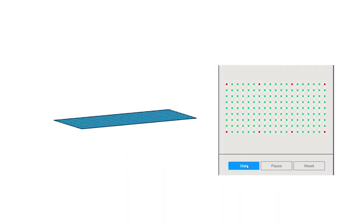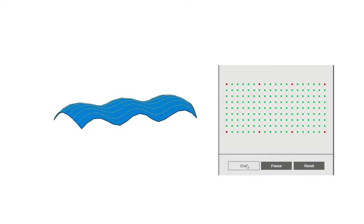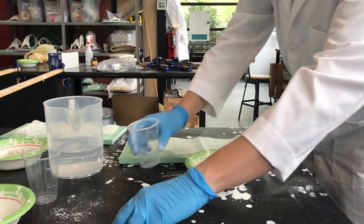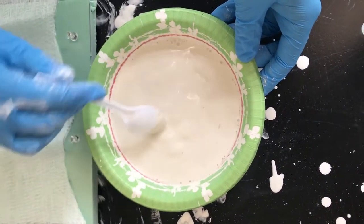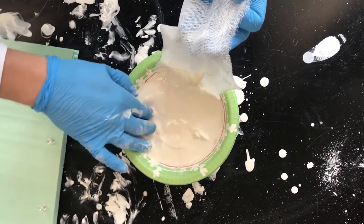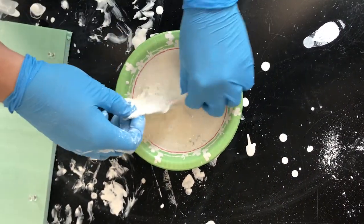Today most form finding of this kind is done on a computer using numerical methods such as dynamic relaxation. In our case, we found that the numerical shapes initially had some limitations. We quickly transitioned over to using physical form finding to prototype our bench.